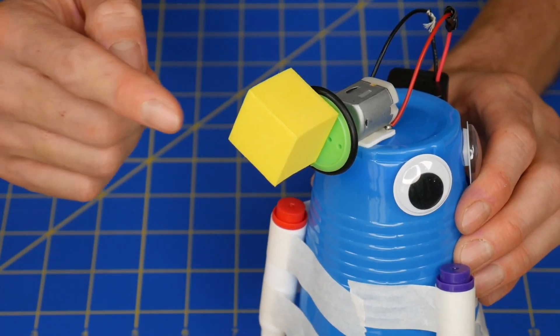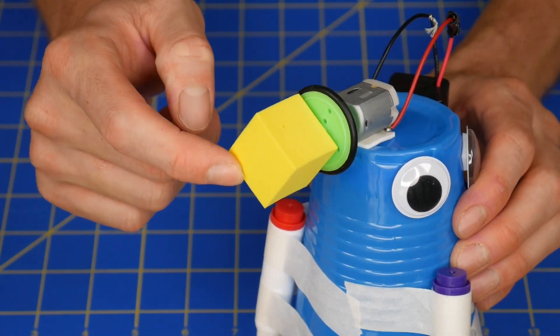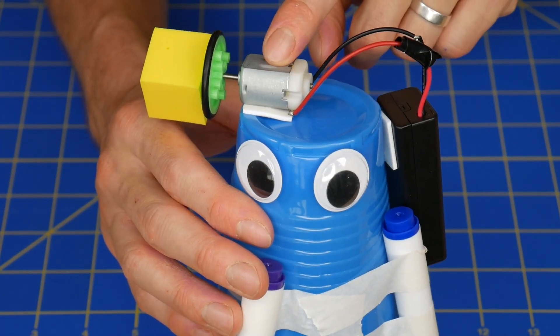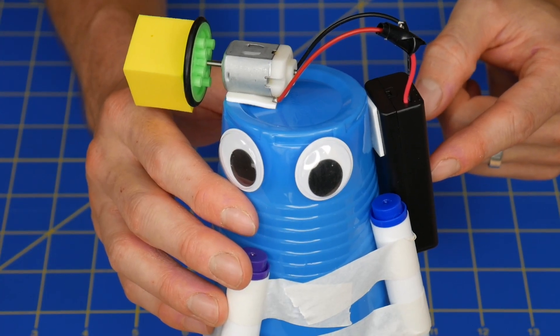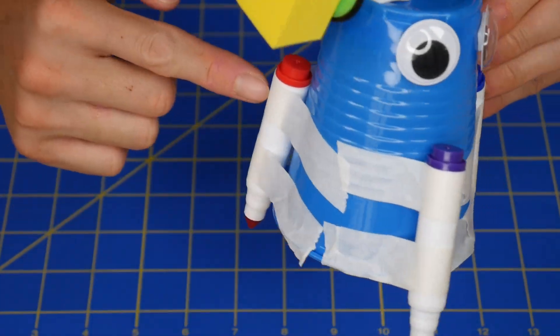The three things that you can experiment with are the position of this asymmetrical weight, the positioning of the motor and the battery holder, and the angle of all three markers.